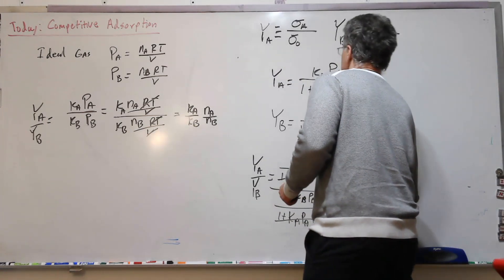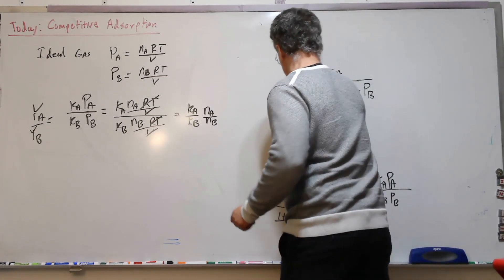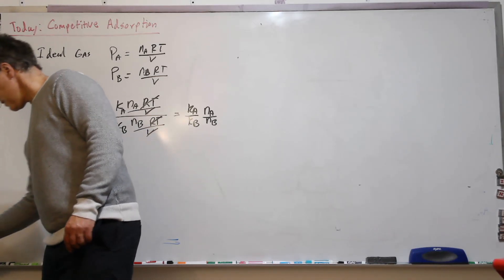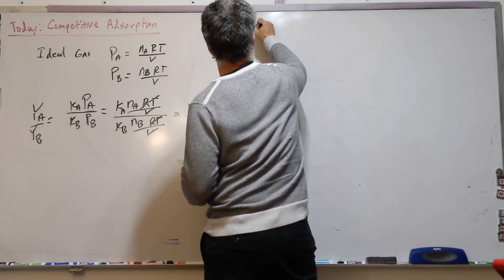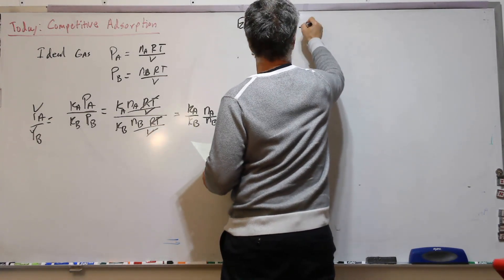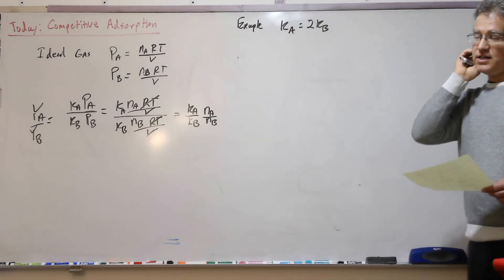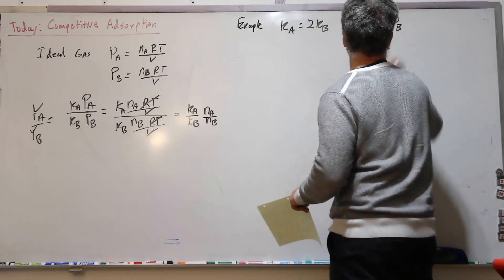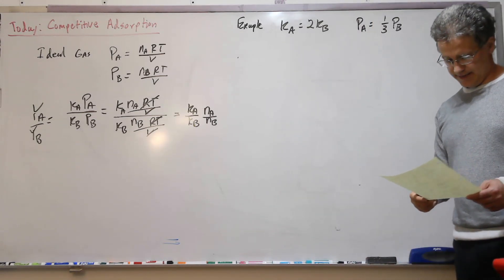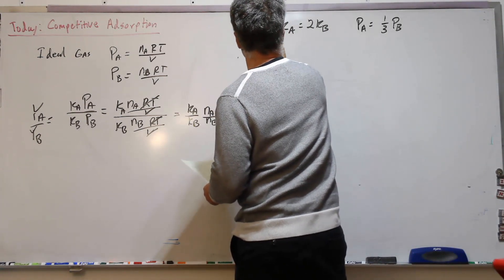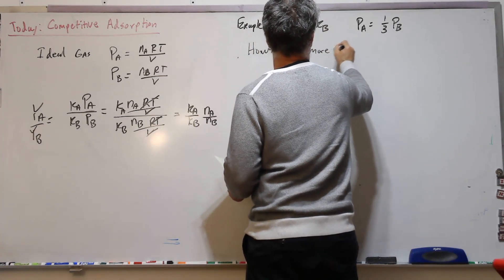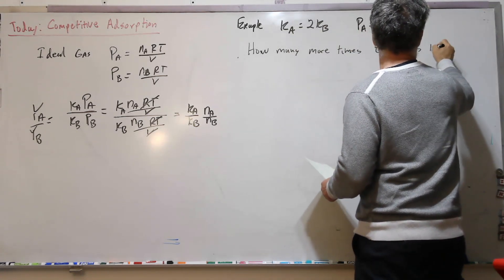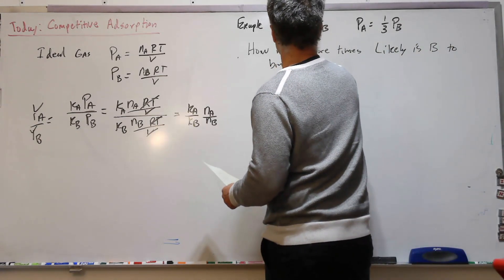Let's do a specific example with a little bit of numbers here. Let K_A equal 2 K_B. So K_A is larger than K_B by a factor of 2. And let's let P_A be one-third of P_B. So the partial pressure of A is a third of that of B. How many more times likely is B to bind than A?